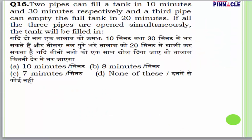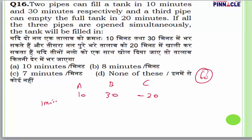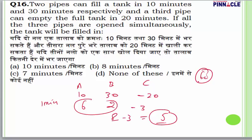Question number 16: Two pipes A and B fill a tank in 10 and 30 minutes respectively; pipe C empties it in 20 minutes. If all three are open simultaneously, when will the tank be filled? Take total capacity = 60 units. Efficiency: A=6, B=2, C=3 (emptying). Net per minute = 6+2−3 = 5 units. Time to fill 60 units = 12 minutes. Answer is none of these.